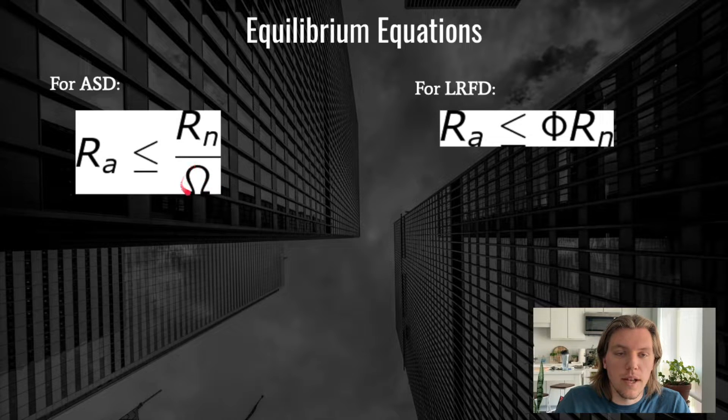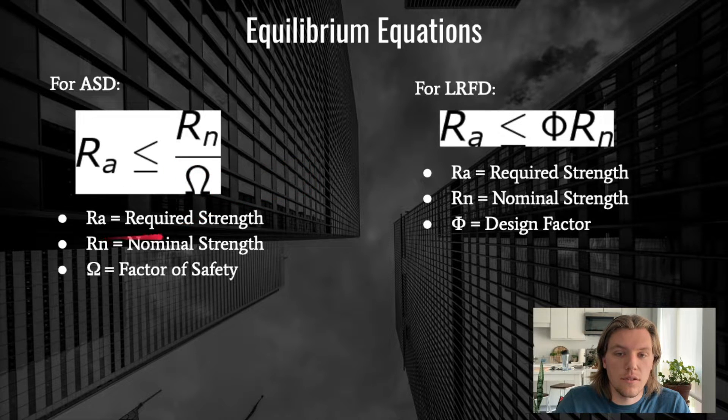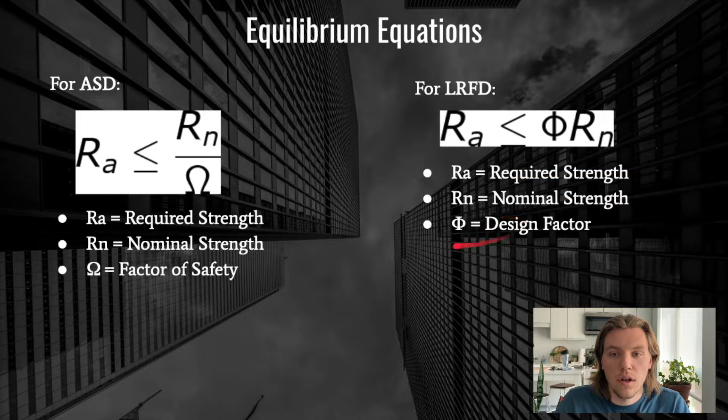Omega, which is divided by on the Rn side, and this is also a factor of safety. So you can see these are the descriptions of those things here, and we'll go into the factor of safety and design factor here in the next slide.